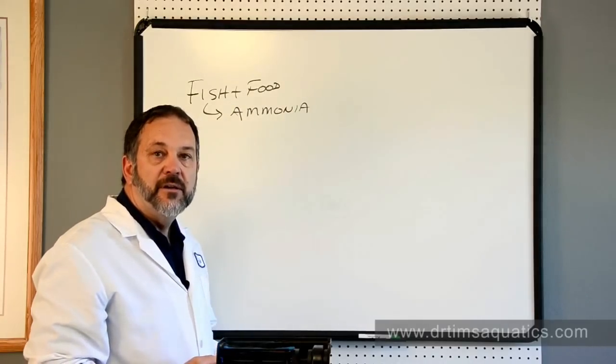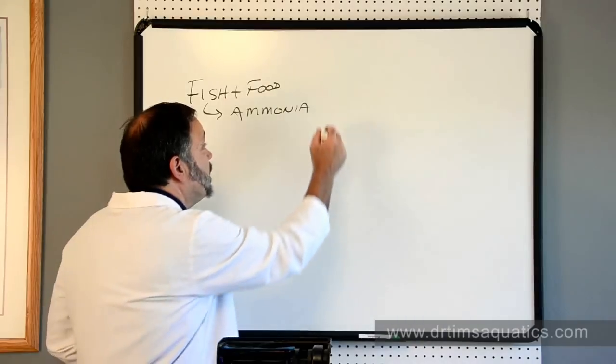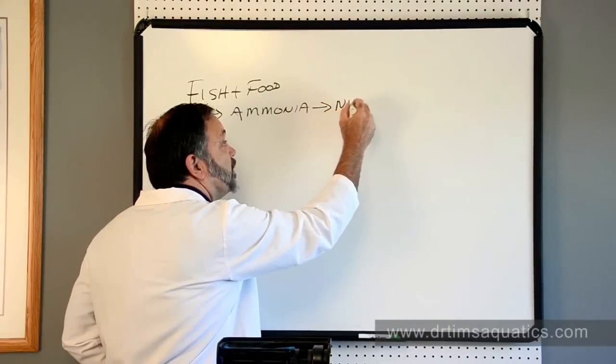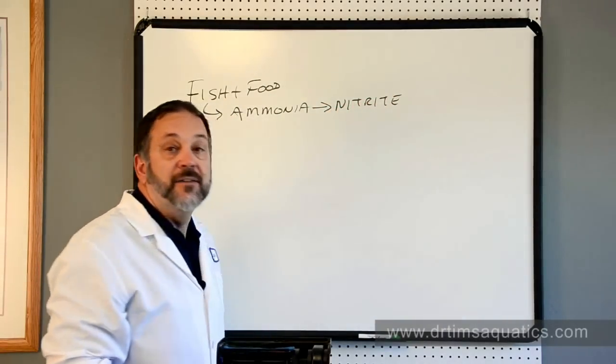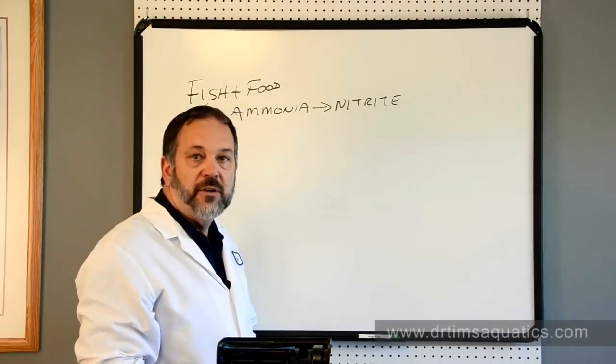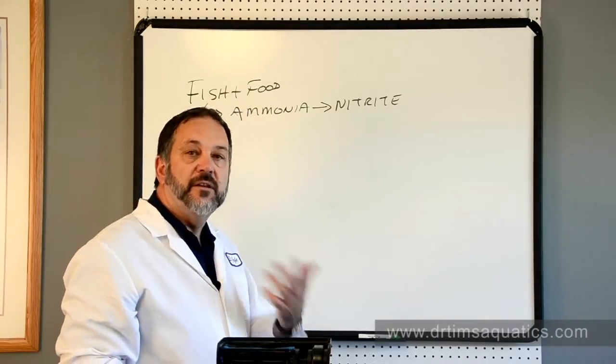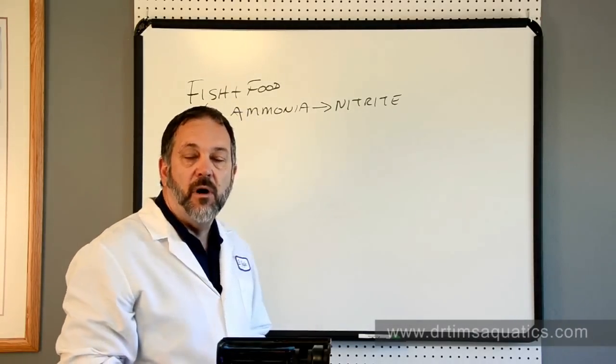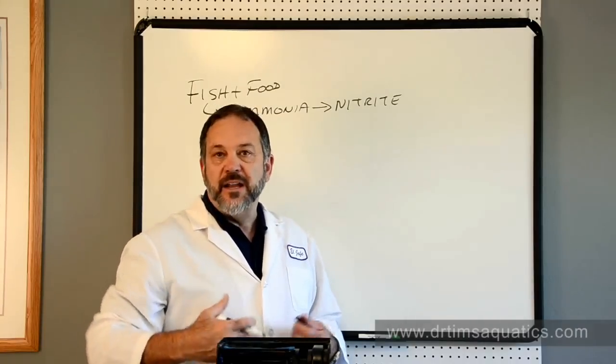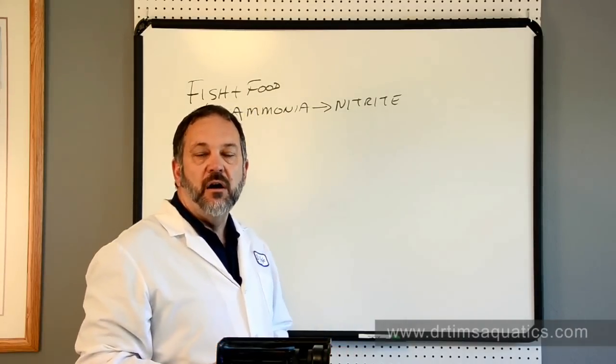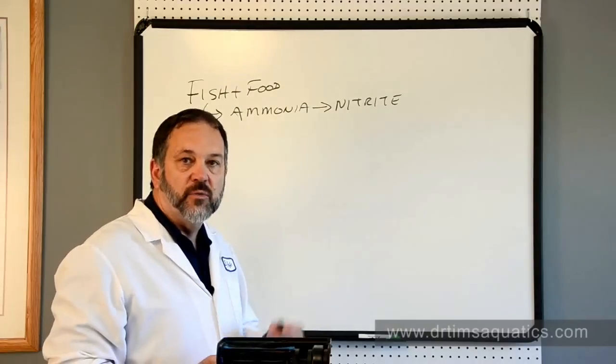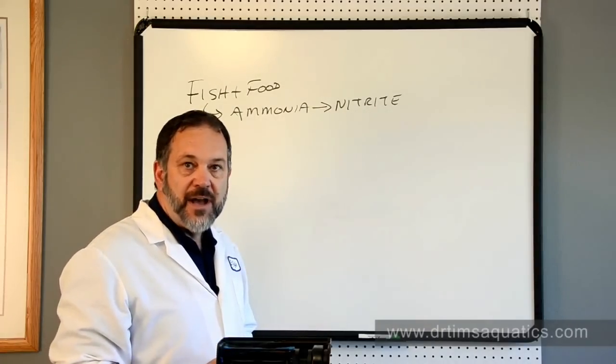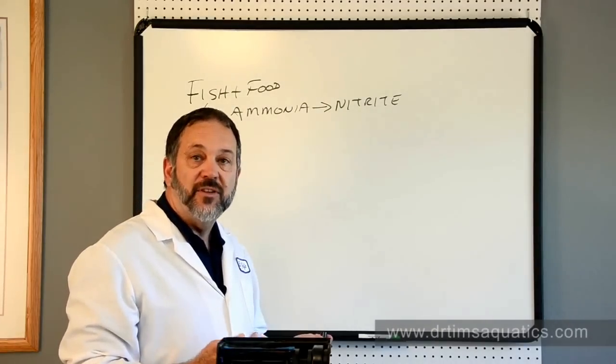Luckily, we have the nitrifying bacteria that will convert the ammonia to nitrite. But unfortunately, nitrite is also toxic. It inhibits the ability of the fish to get oxygen out of the water, which is why high nitrite toxicity is also called brown gill disease. Instead of being a bright red purple, the gills will be brown, and that tells you they're not getting any oxygen, and they actually suffocate.